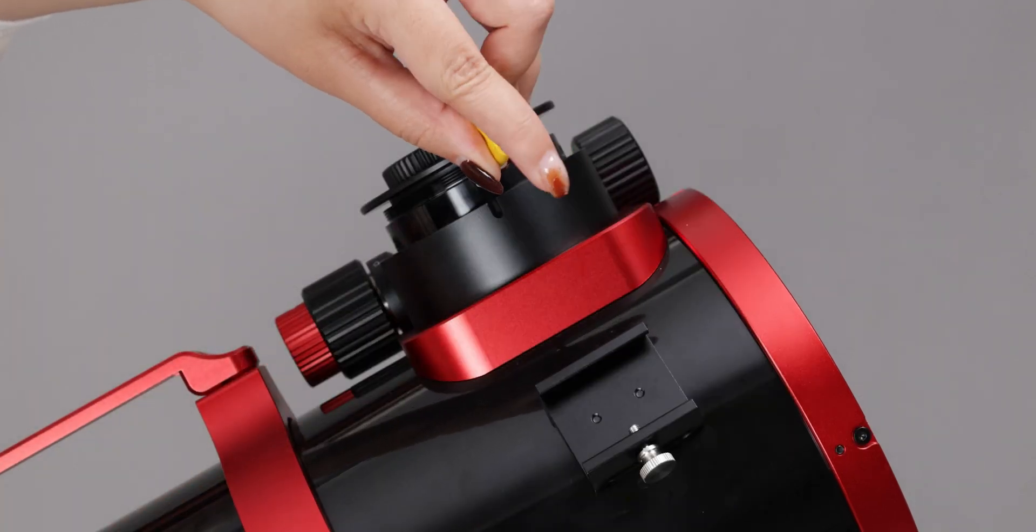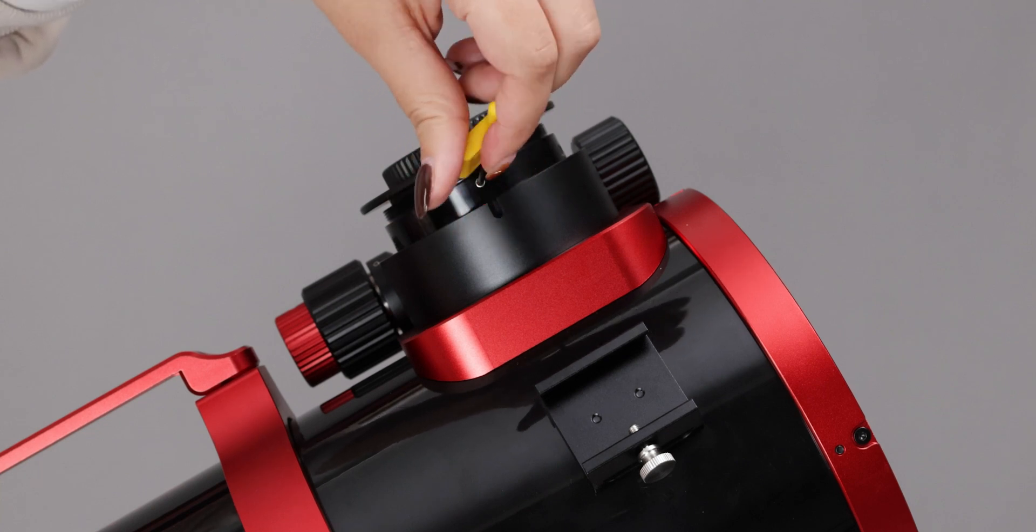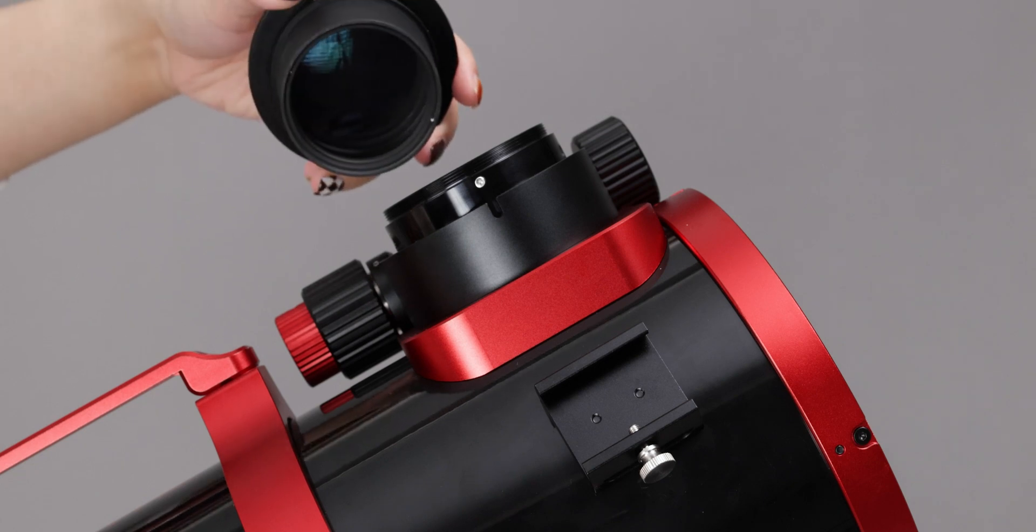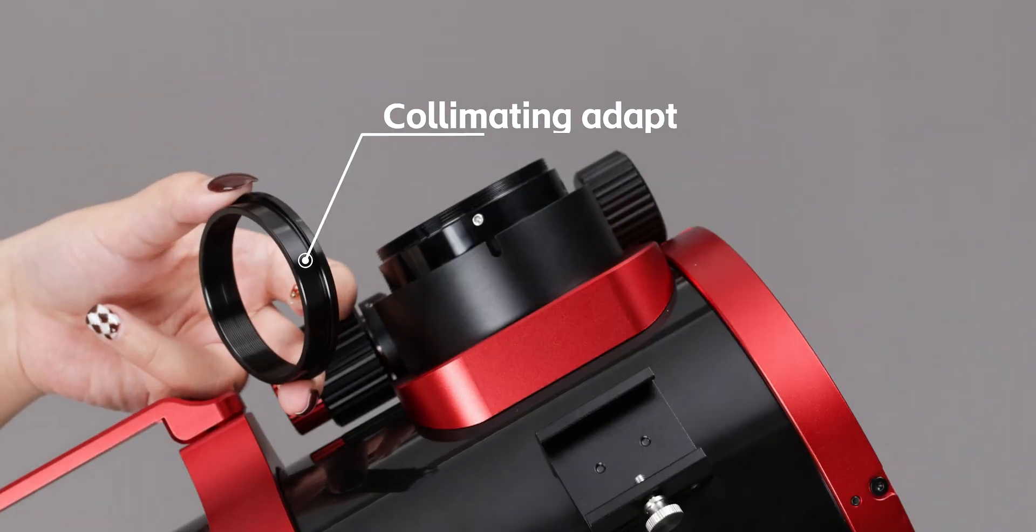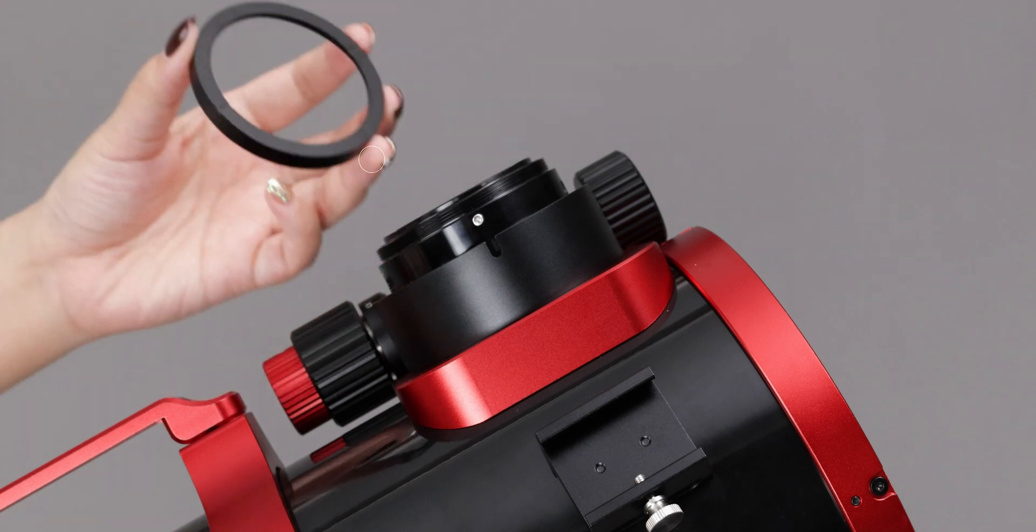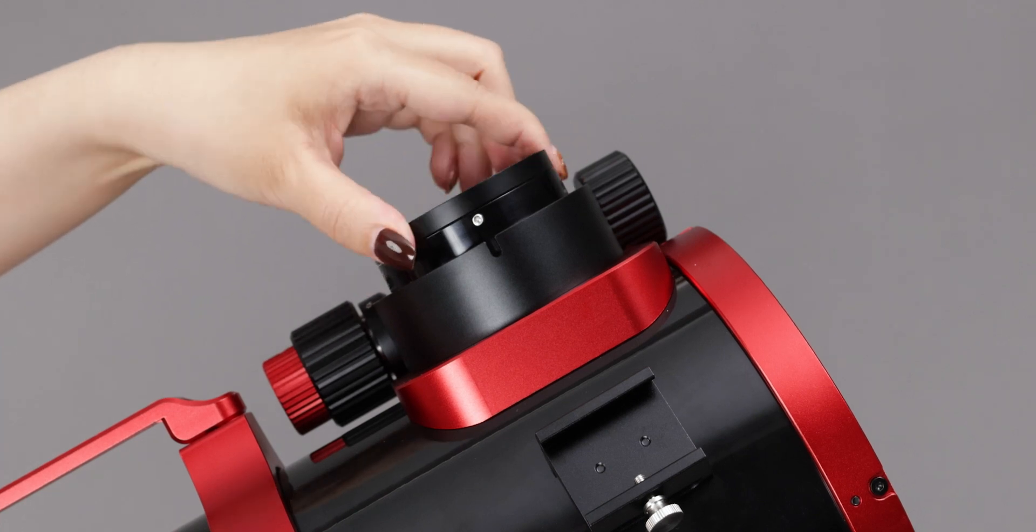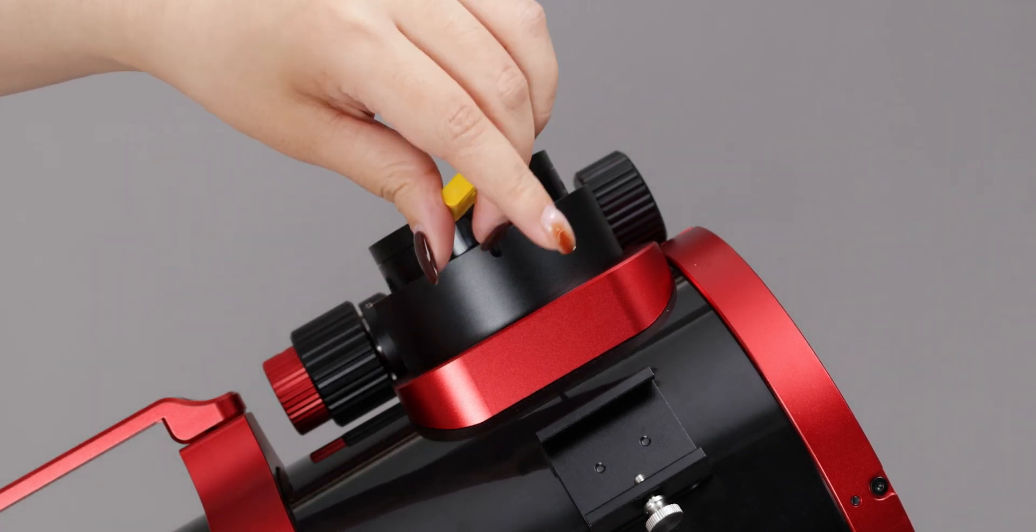Use a T8 wrench to loosen the rotator locking screw and take out the corrector. Attach the collimating adapter and the corrector locking ring to the focuser. Then use a T8 wrench to tighten the rotator locking screw.